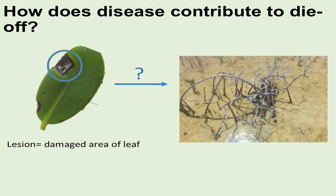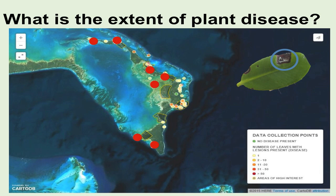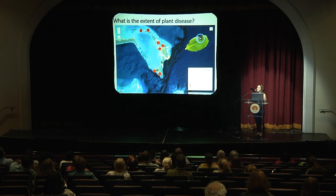We also noticed leaves with lesions in the die-off area — so we have plant disease present. We did surveys up and down Abaco looking for this plant pathogen and found it basically everywhere, establishing the extent of its distribution. That suggests that yes, this plant disease isn't necessarily the main cause, but it's certainly much more concentrated and doing a lot more damage in the die-off area.